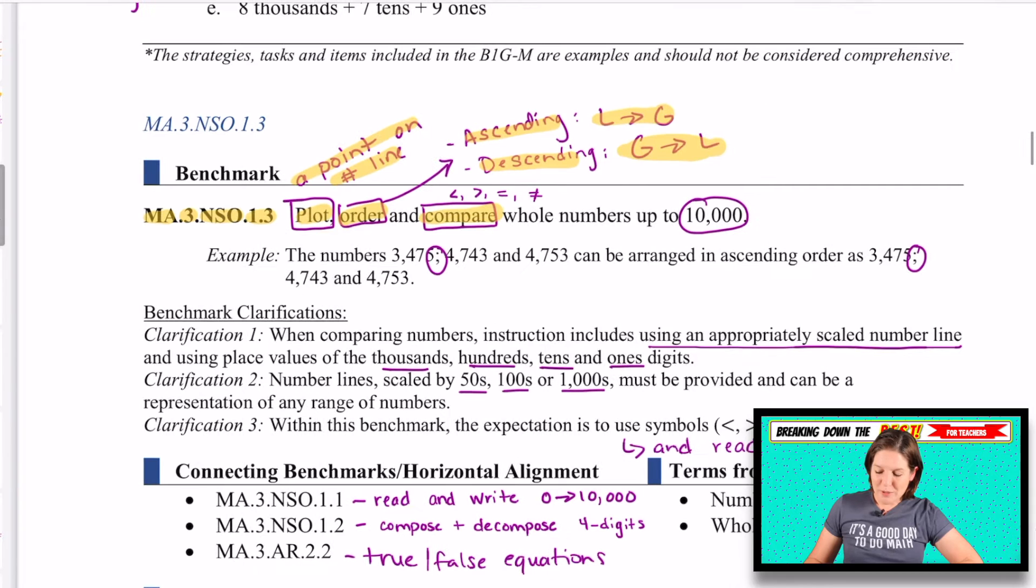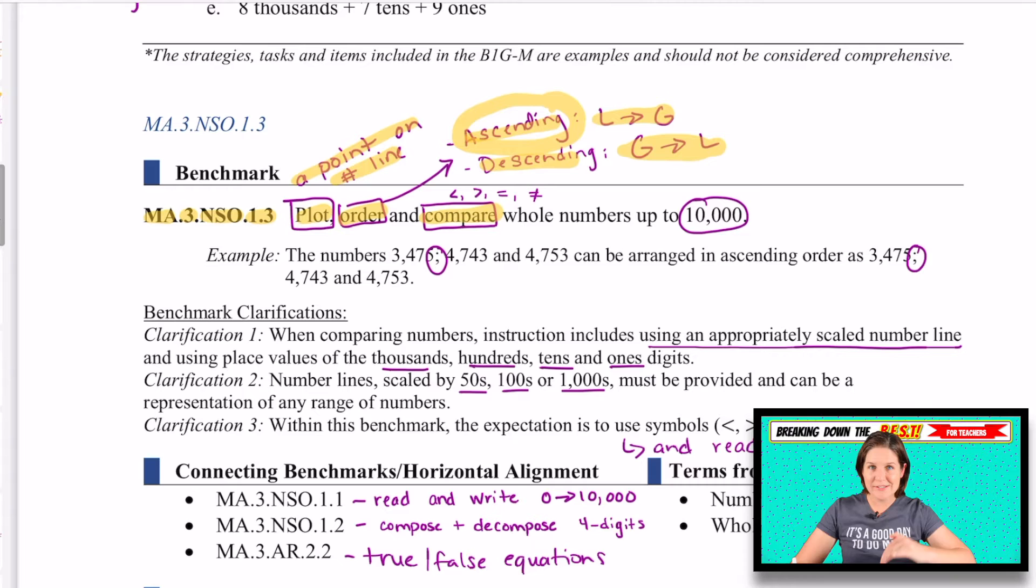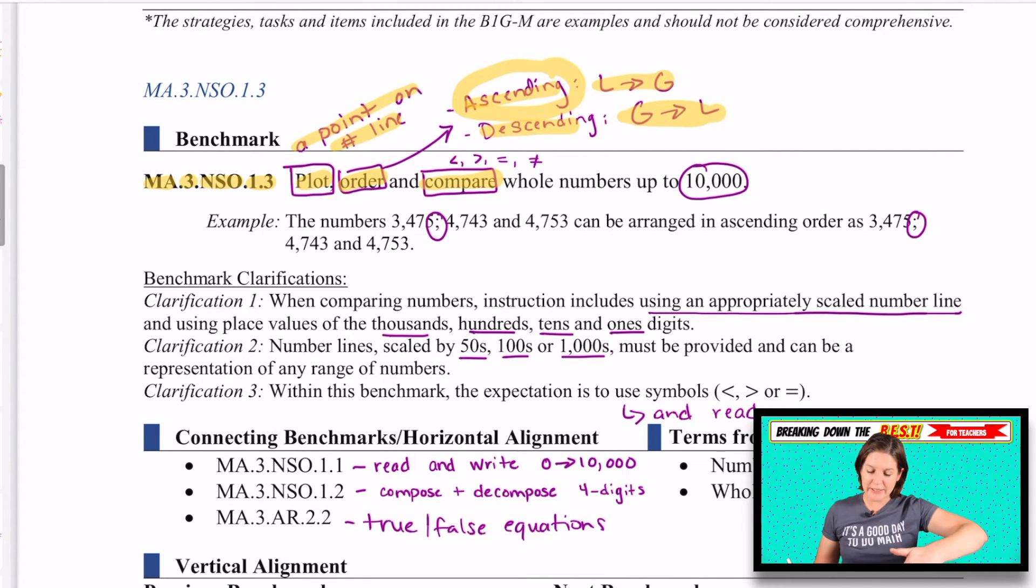Ordering means to order numbers in ascending order. That means going from least to greatest. And descending, like in a plane, when you're making your descent, you're going from greatest to least. For the most part with the standard, I've seen it just focusing on ascending order, least to greatest. But just in case, I would make sure to teach greatest to least as well.